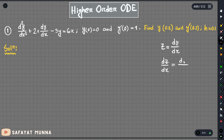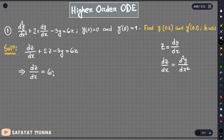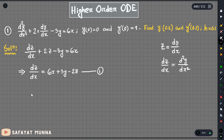We will get d squared y dx squared. For the main function, we have dz/dx plus 2z minus 3y equals to 6x. So this is the equation to convert. dz/dx equals to 6x plus 3y minus 2z. And dy/dx equals to z. This is the system that we have.